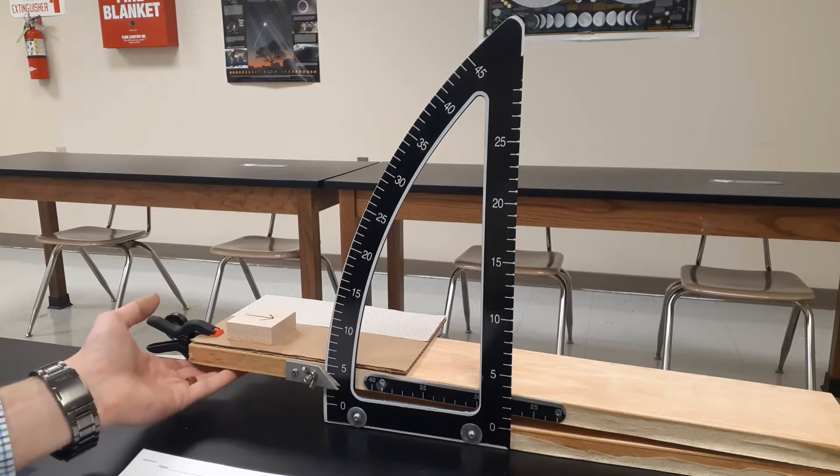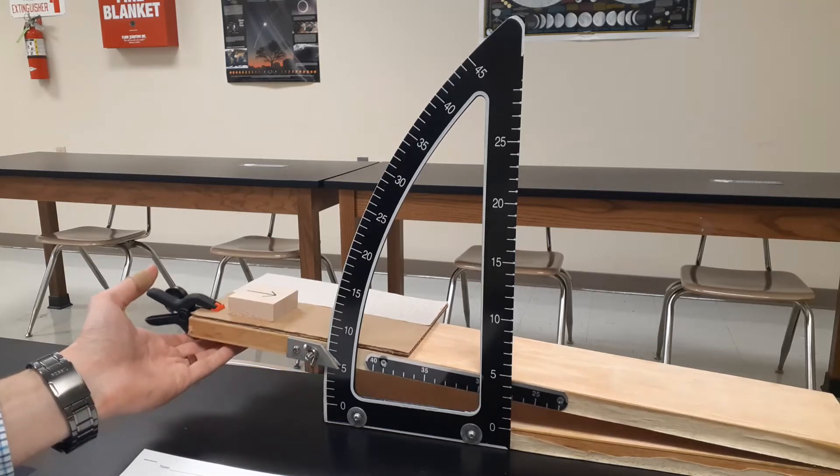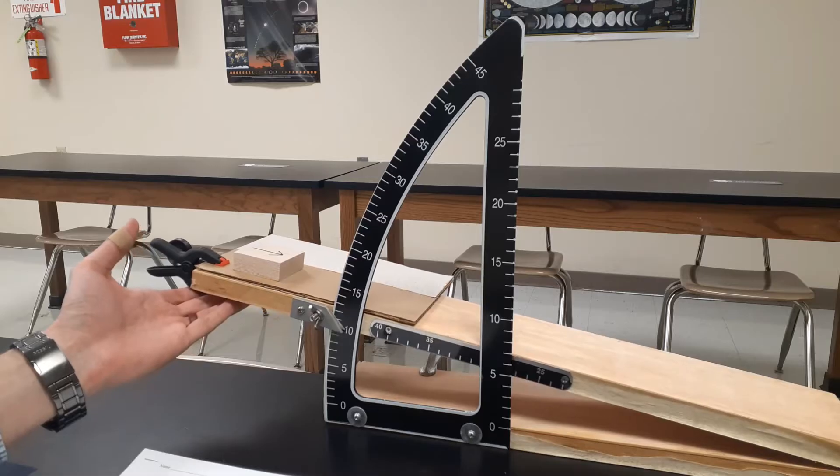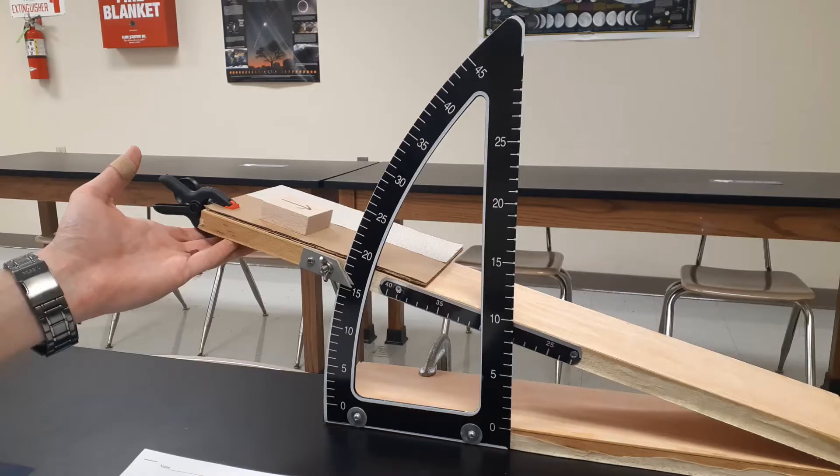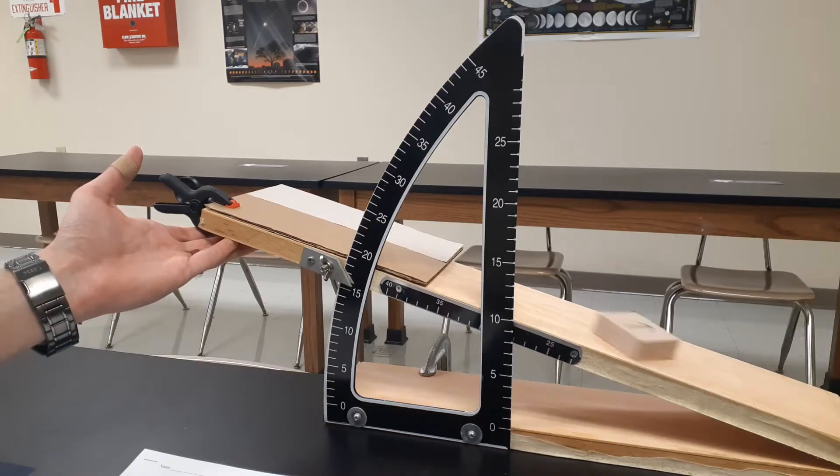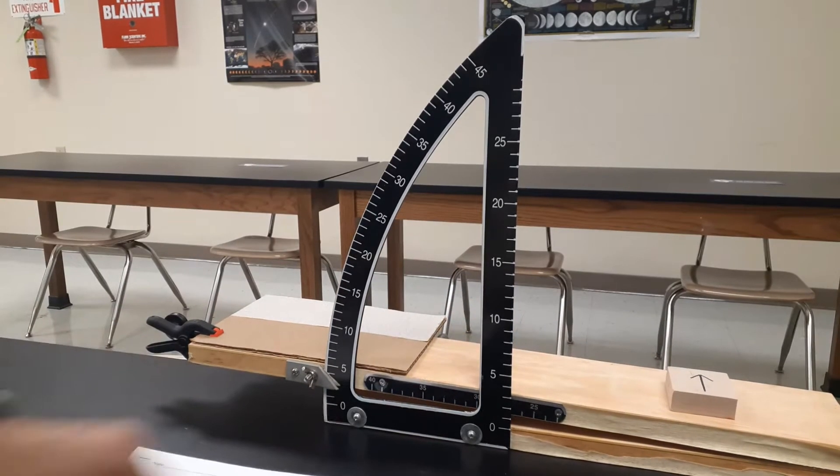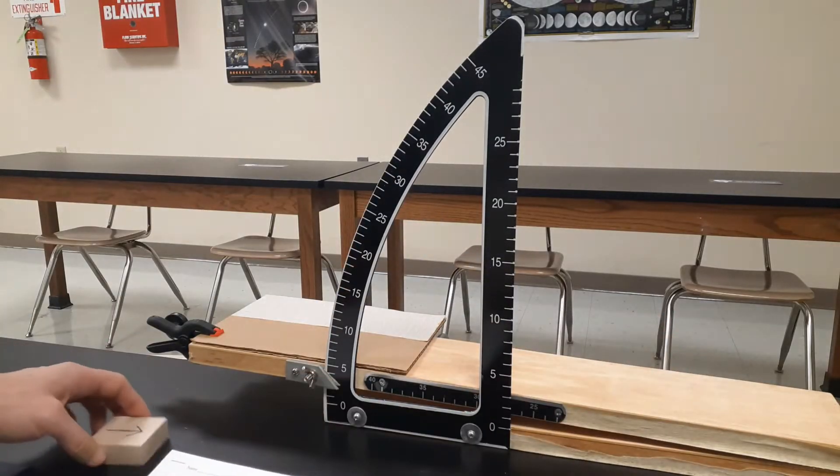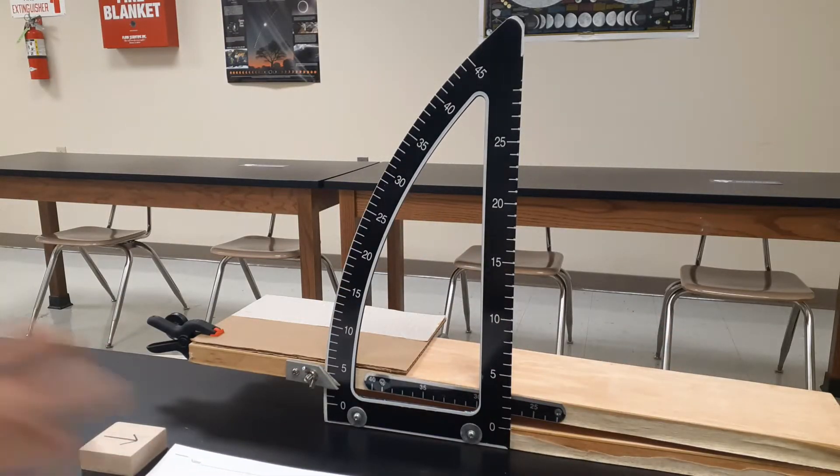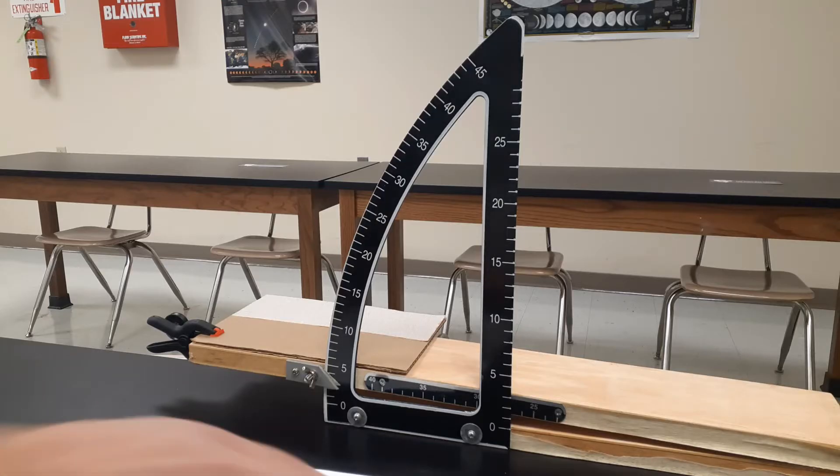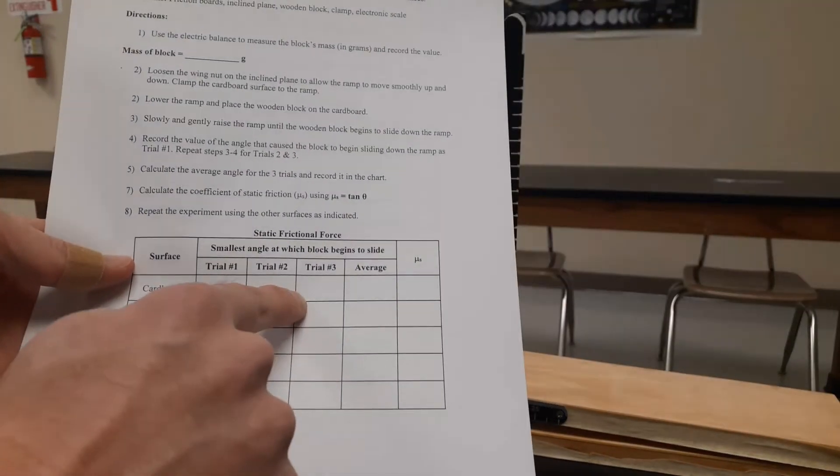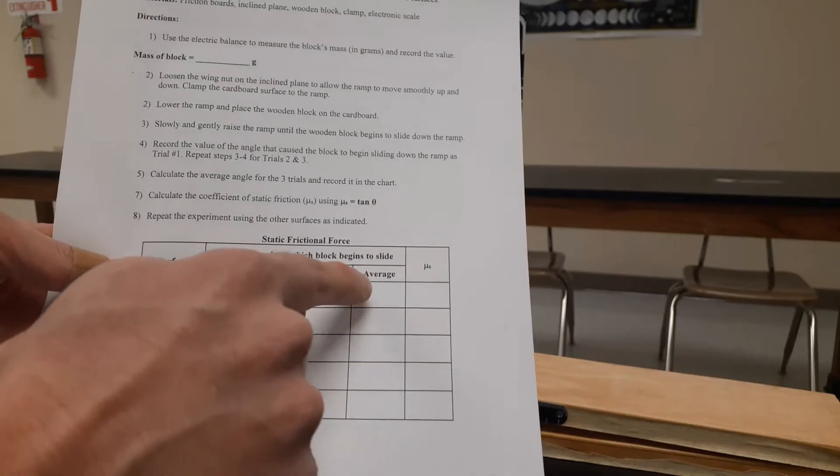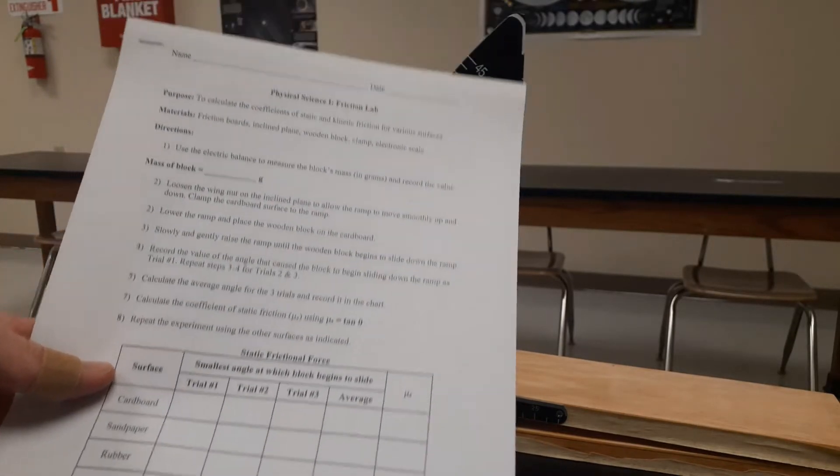Right now we're studying static friction because the static friction is keeping that block stationary. But as this angle becomes larger and larger, gravity's pulling with a greater downhill force. That time it slid at 16 degrees. Greater downhill force of gravity eventually overcomes that static friction, makes the whole thing start to slide. So we just did the three for cardboard. Just add those three up, divide by three, that's going to give you the average.